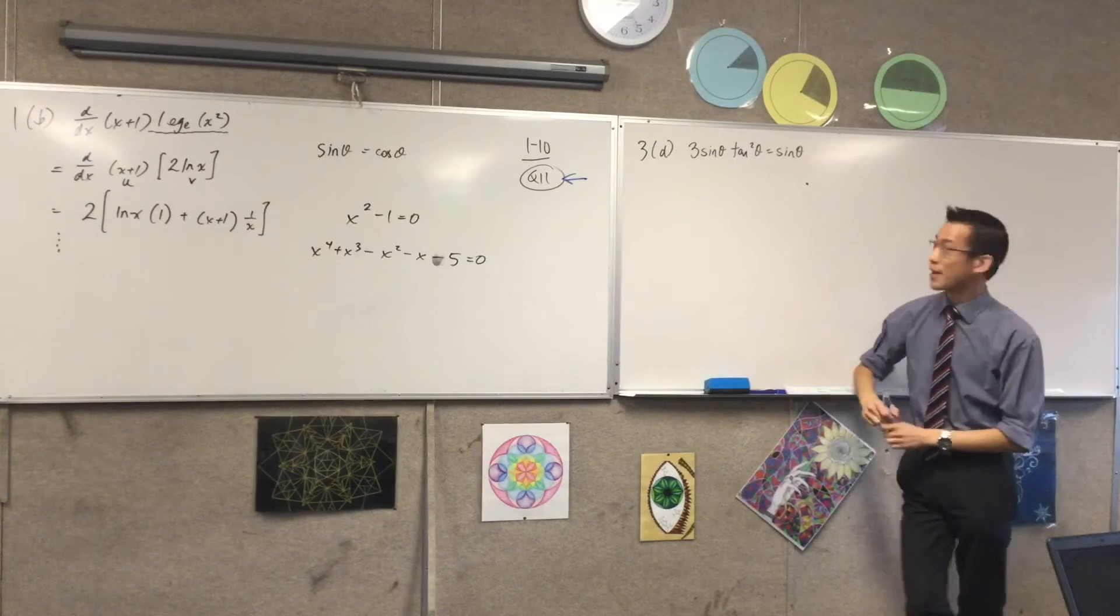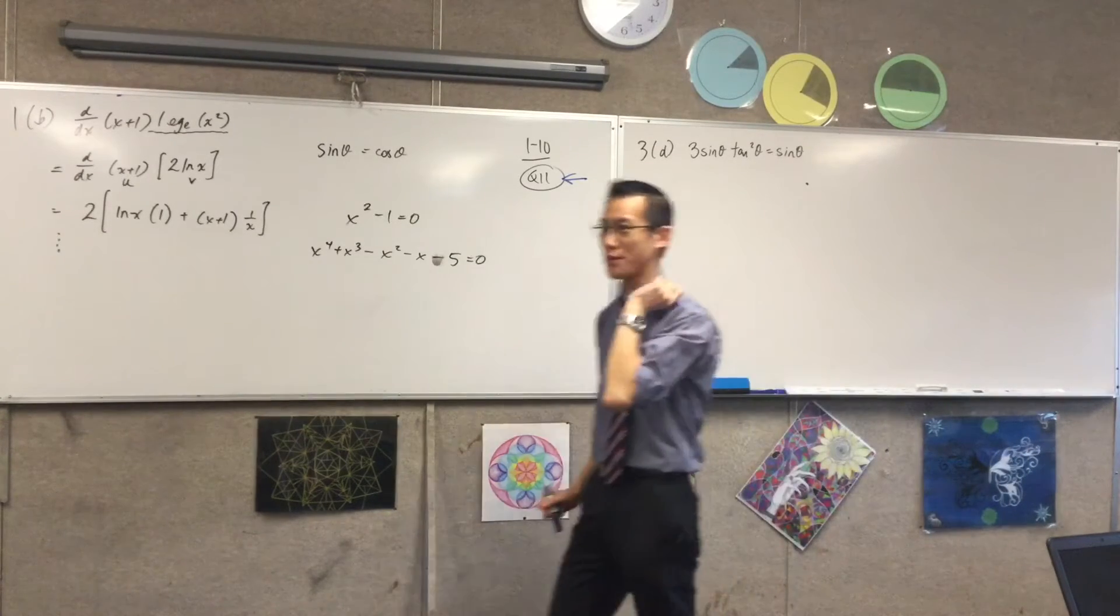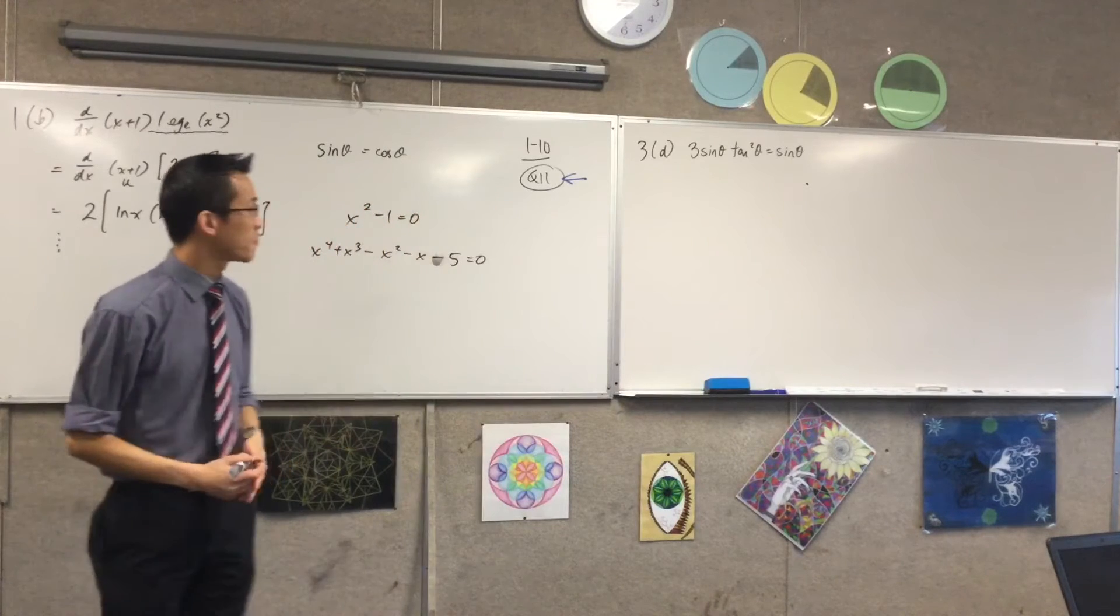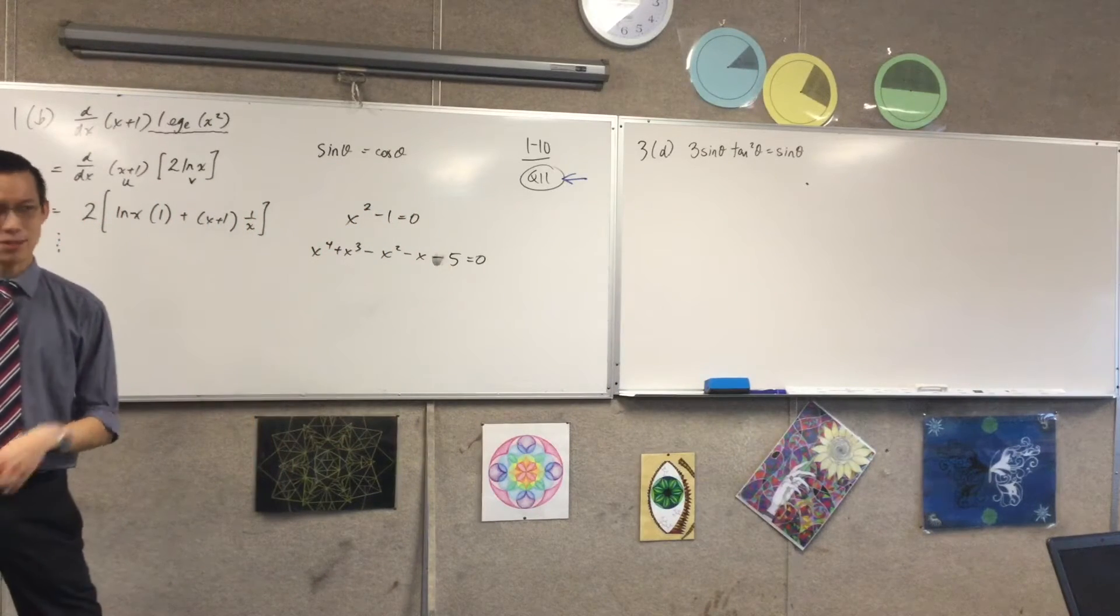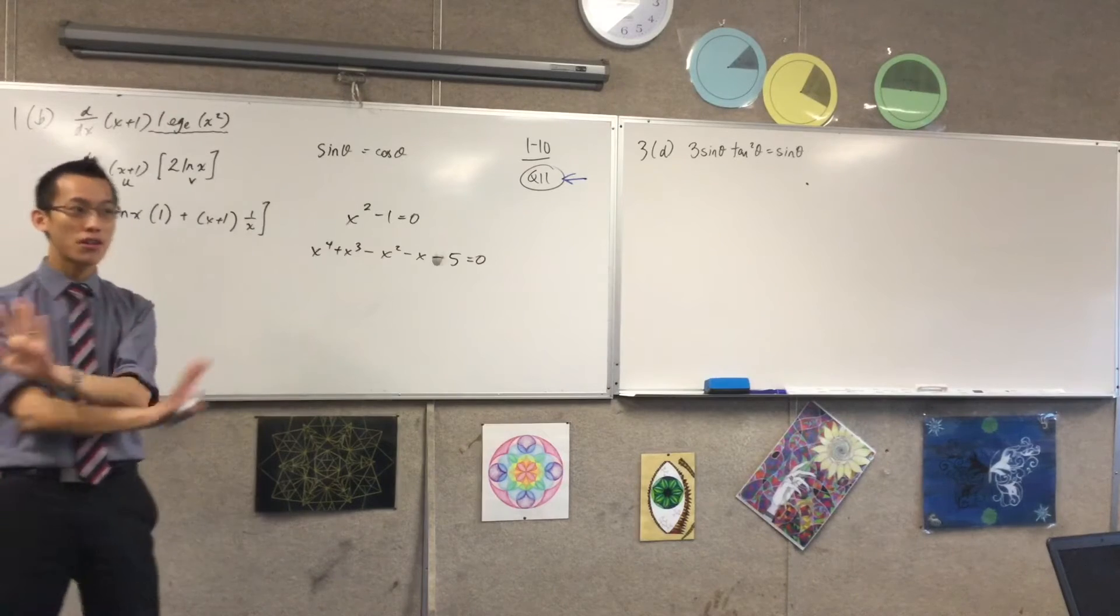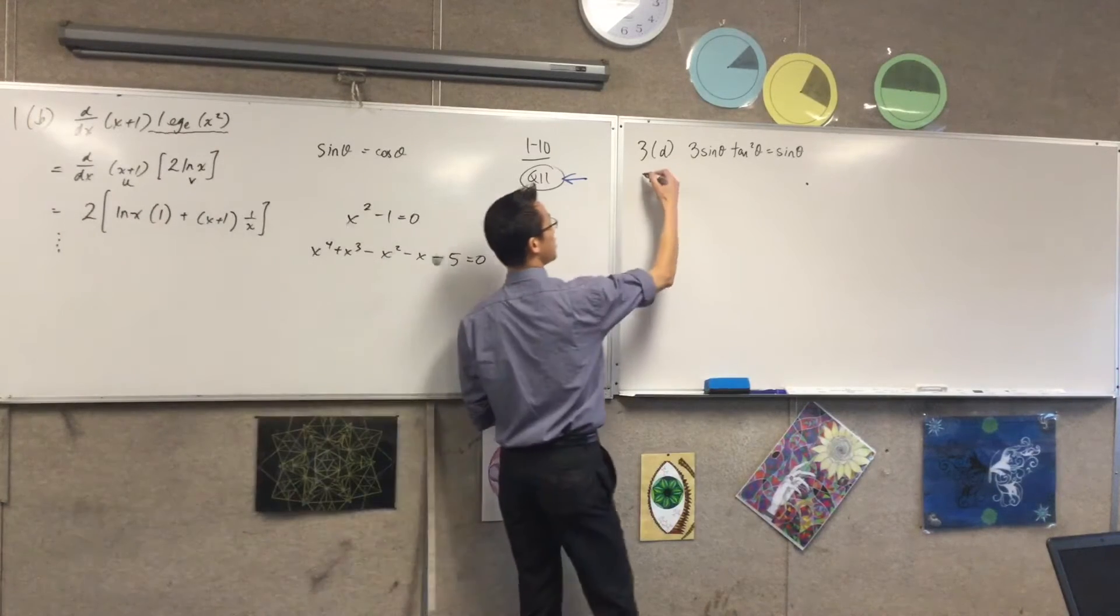So, here's the way I went through it. Step number one, or should I say error number one, is to get everything on one side. Do not divide through. Do not, do not, do not divide through. Here's my first line.